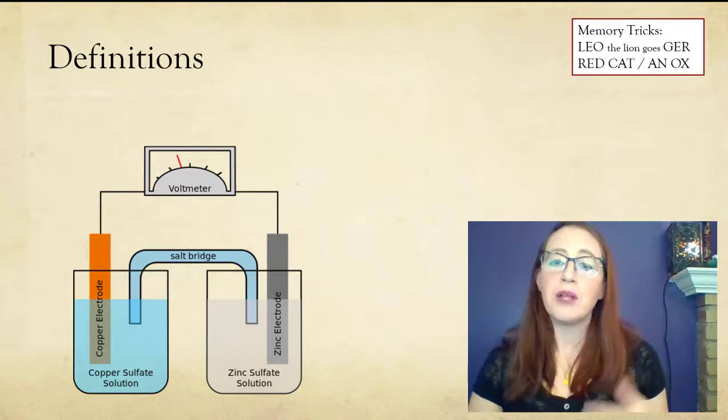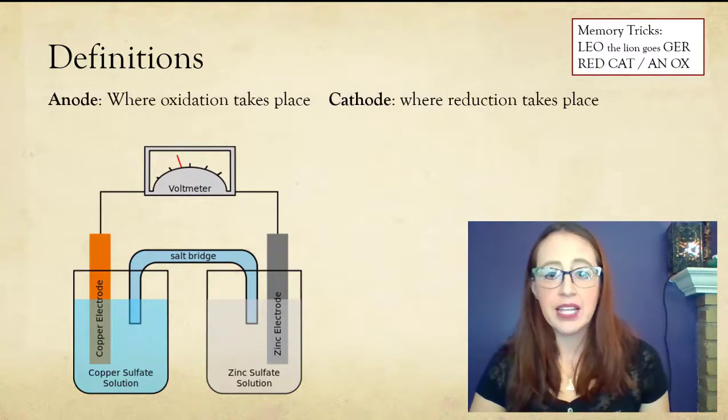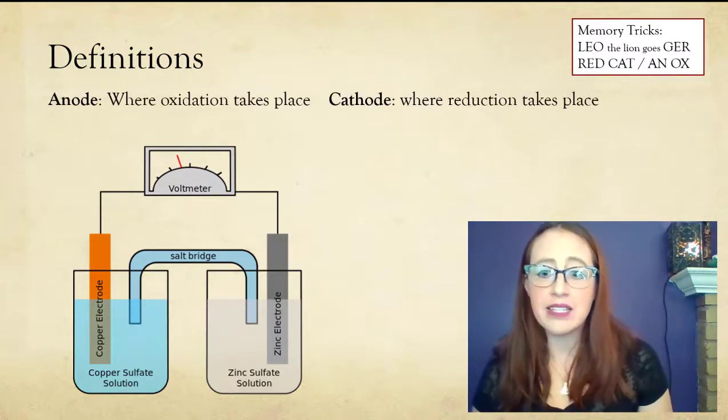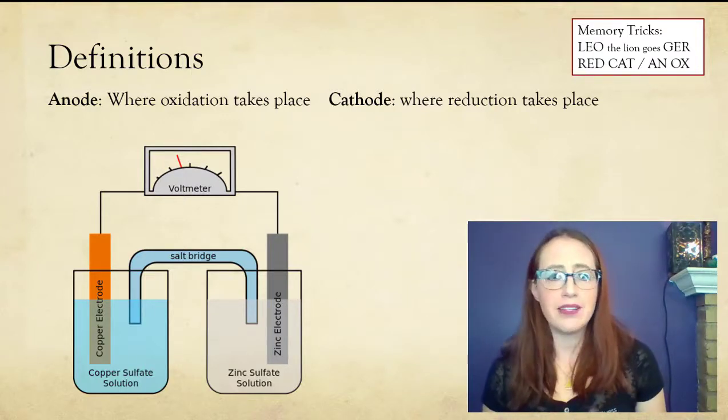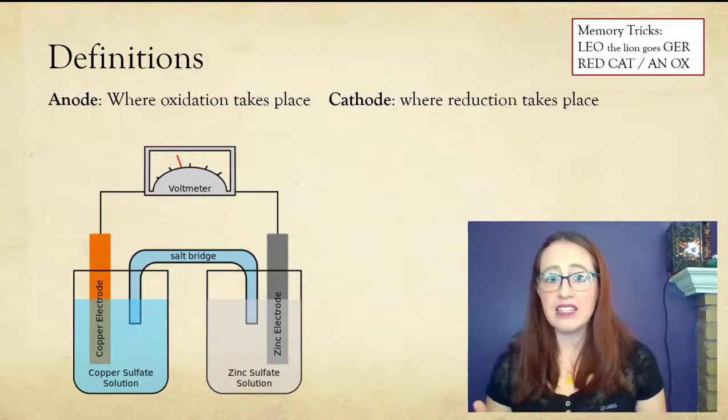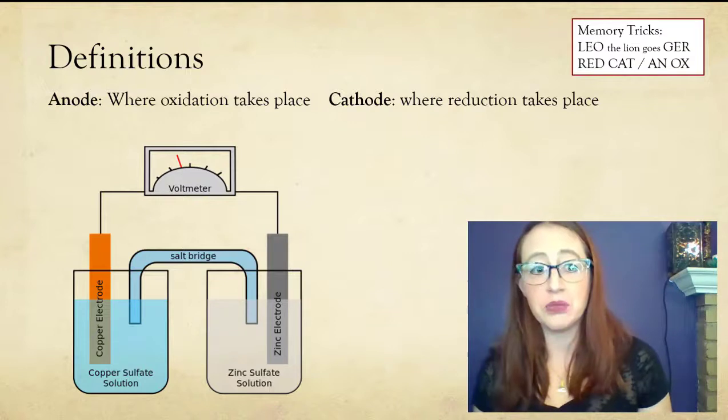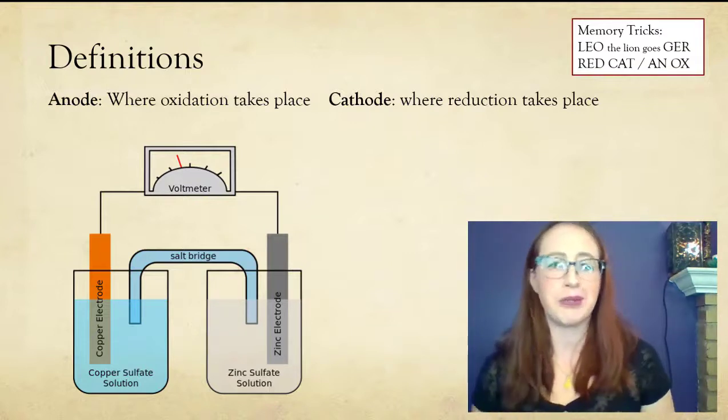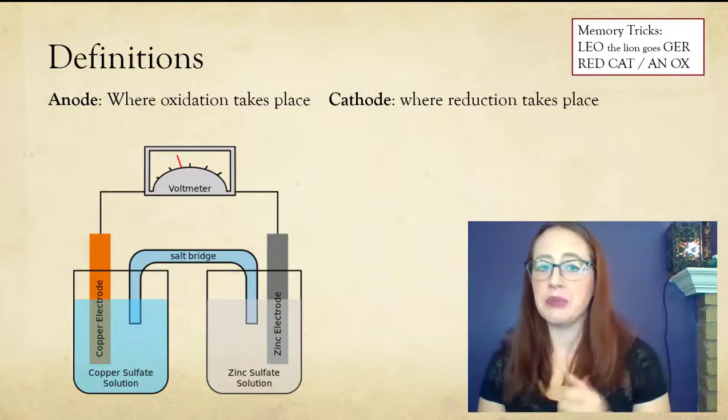So what do we call these? Well, the cathode is the area where reduction occurs. The anode is the area where oxidation occurs. The memory trick for this one is red cat and an ox, which I think is a super lame memory trick, but it is the most commonly cited and used one. But obviously, come up with your own if you don't like that one. And if you come up with a really good one, let me know and maybe we can just use that instead.